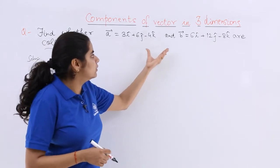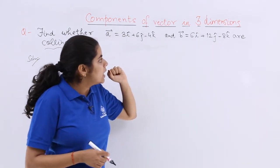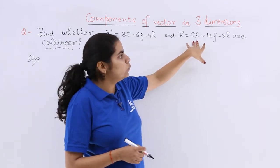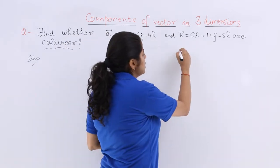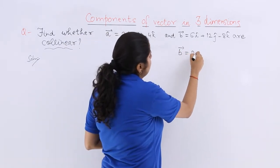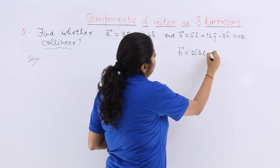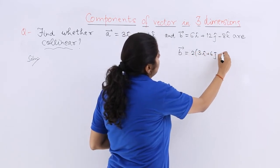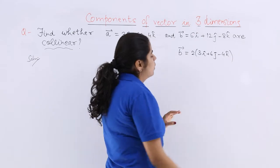Now see, a⃗ vector is given, b⃗ vector is given. If I feel like taking two common out of this b⃗ vector, what happens? b⃗ vector = 2 times (3i cap + 6j cap - 4k cap).